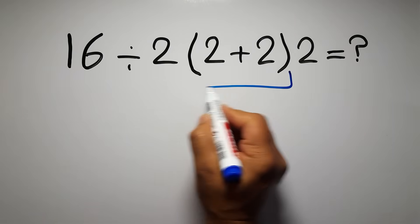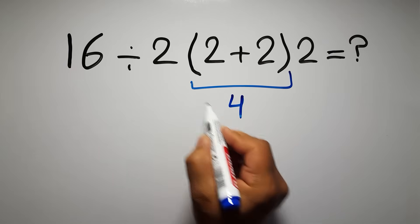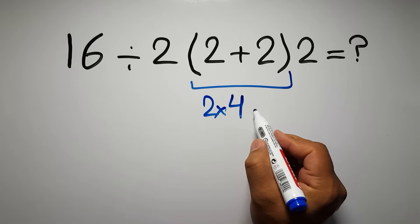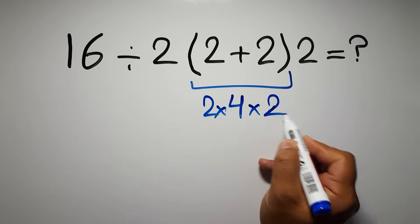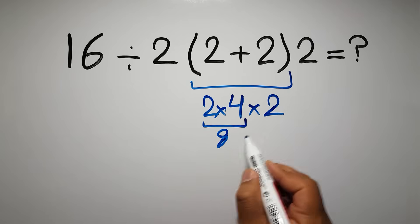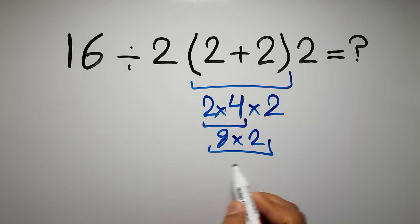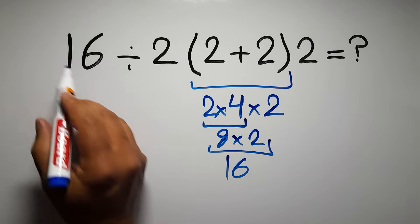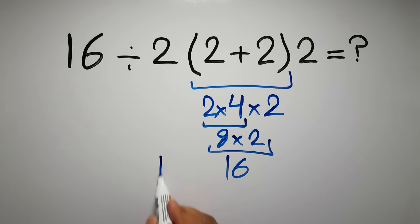2 plus 2 gives us 4, and 2 times 4 times 2... 2 times 4 gives us 8, and 8 times 2 is 16. So 16 divided by 16 gives us 1. But this